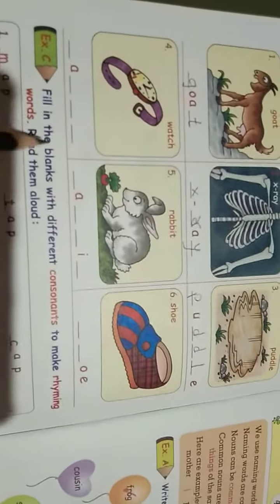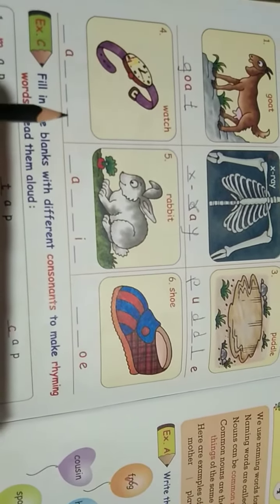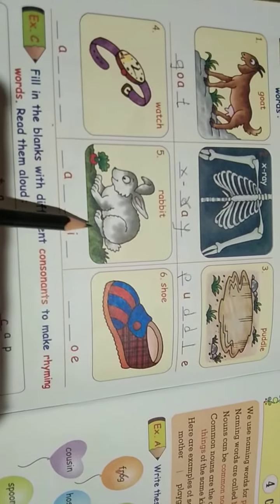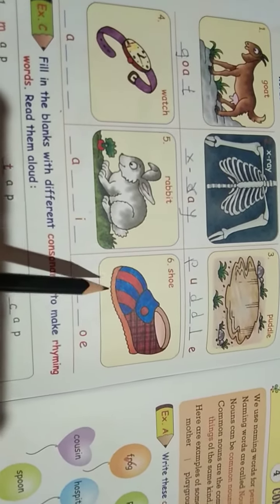Next observe which picture of watch. Here all consonants want to write. Rabbit, here also consonants want to write. And shoes, here also consonants we want to write.